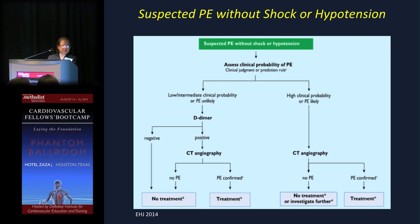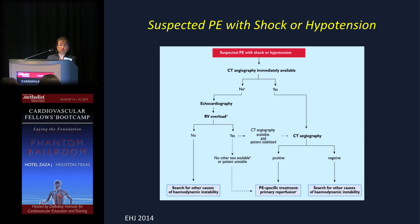If a patient has high clinical suspicion for PE, proceed directly to CT scan; if no PE, investigate further; if confirmed, treat. If the patient is in shock and hypotensive, get a CT scan immediately — if not immediately available, get an echo, start treatment, and try to stabilize the patient.